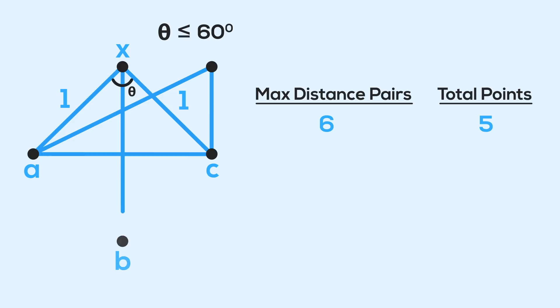So, if we remove point B, then we only remove one max distance line segment, and now we have four points in total, with five max distance line segments.